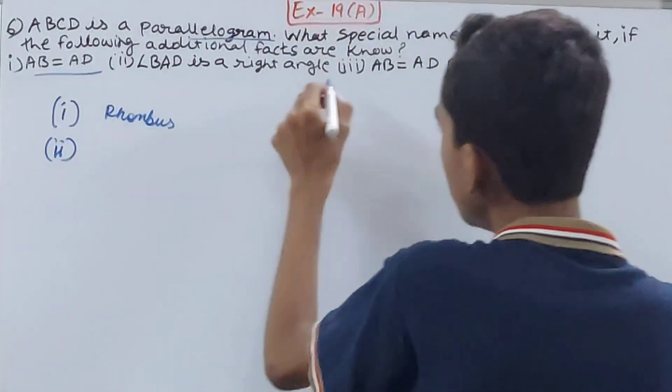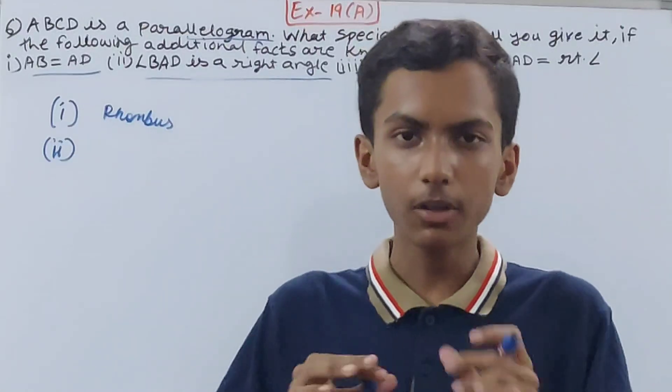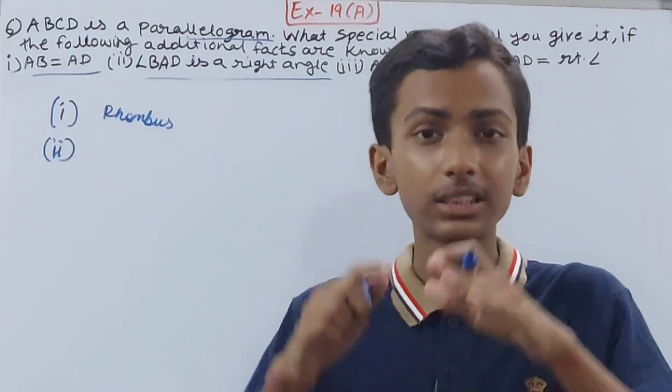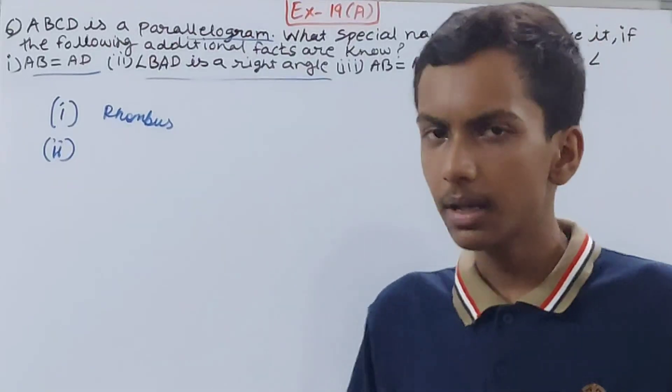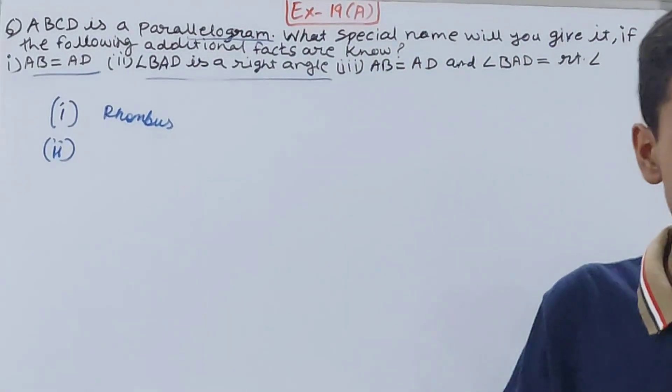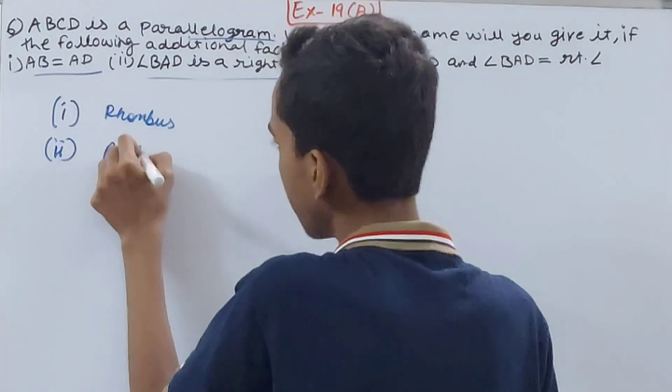Part two: Angle BAD is a right angle. If we look at the definition, it is rectangle that talks about the angles. All the angles are 90 degrees in a rectangle. According to that, here we have got a right angle, it means 90 degrees. Therefore this figure will be known as rectangle.